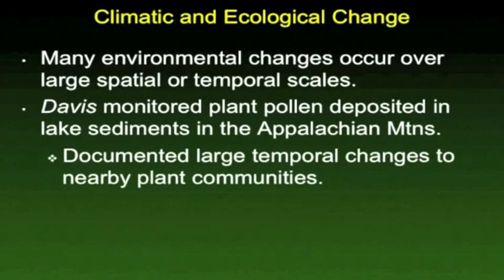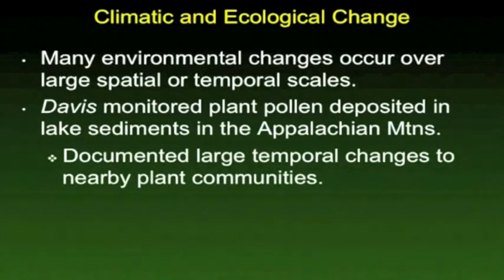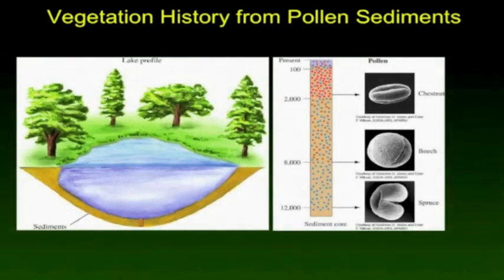Moving now to a much larger scale, we look at research being done in the area of climate change and the associated changes to ecological systems — this is a global effort that spans a broad range of time. The study referred to in your book by Davis involves taking a core from the bottom of a lake. You can peel away layers of the core, which are equivalent to years if you know the rate of sediment deposition, and look at the types of pollen in each layer to figure out what kinds of trees surrounded that lake maybe 5,000 or 10,000 years ago.